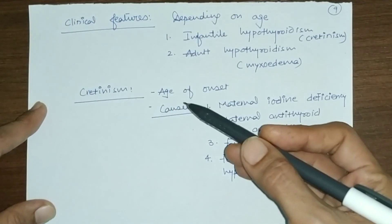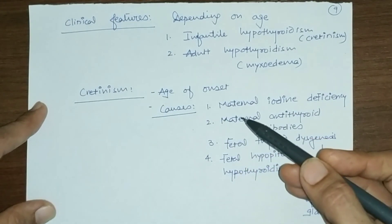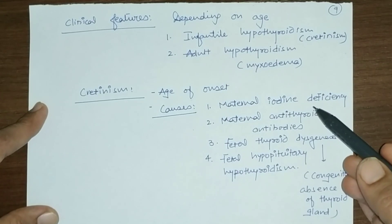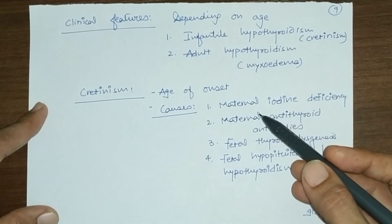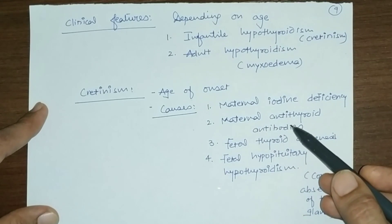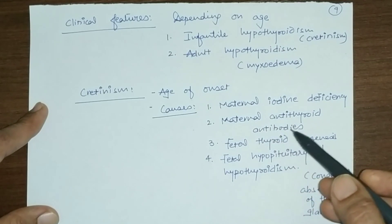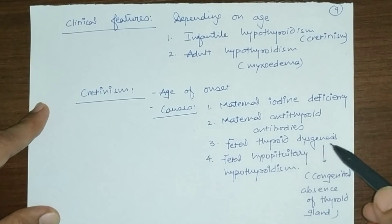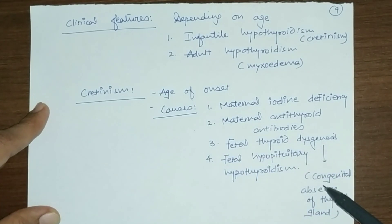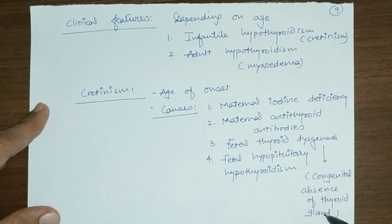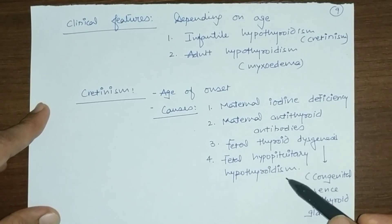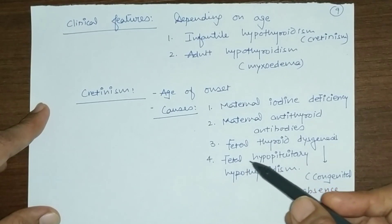Common causes of cretinism include maternal iodine deficiency, maternal antithyroid antibodies, fetal thyroid dysgenesis (congenital malformation or absence of the thyroid gland), fetal hypothyroidism, and fetal hypopituitary hypothyroidism where the pituitary gland of the fetus is not developed.